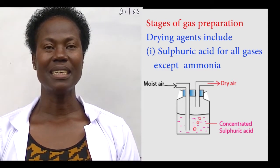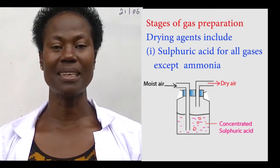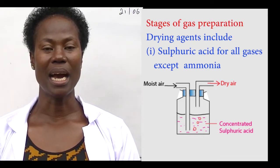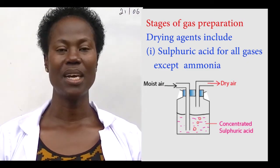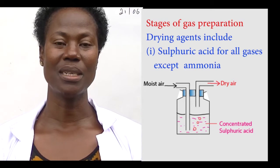Concentrated sulfuric acid can be used for all gases but not ammonia because ammonia is an alkaline gas so it can react with an acid to produce a salt and water only.